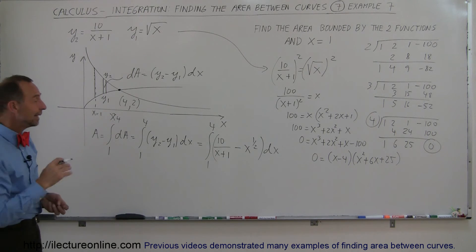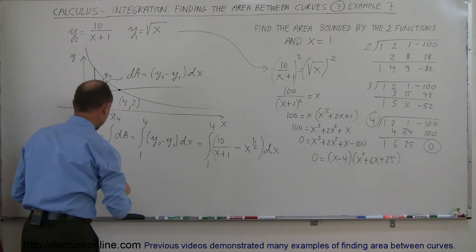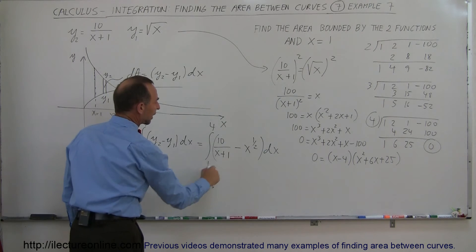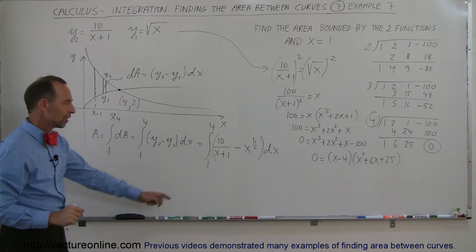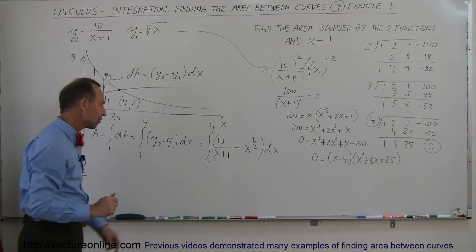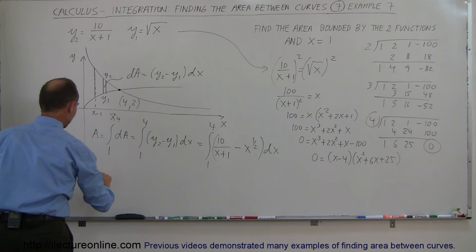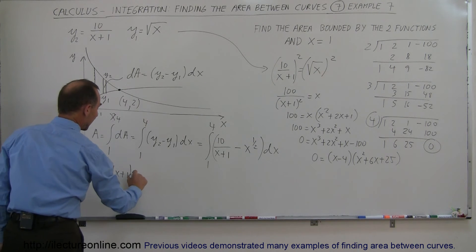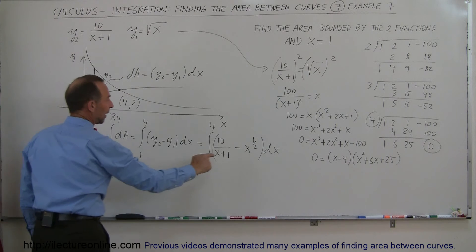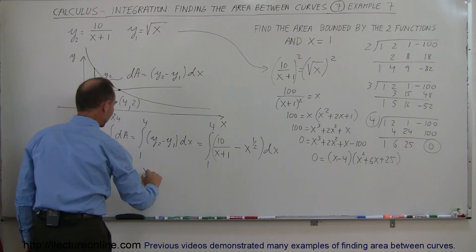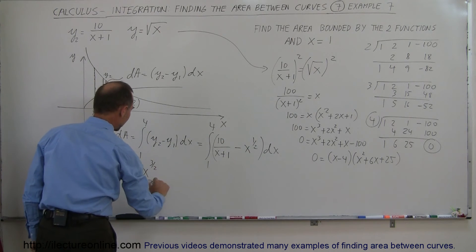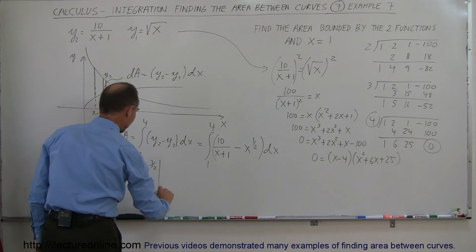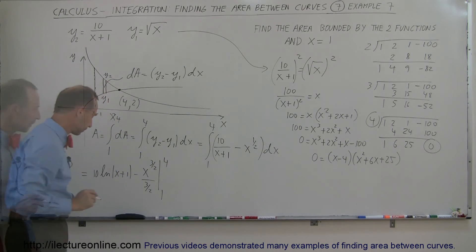Now I'm ready to integrate. The integral of 10 over (x+1) gives 10 times the natural log of (x+1). The integral of x to the one-half becomes x to the three-halves divided by three-halves. We evaluate this from 1 to 4.